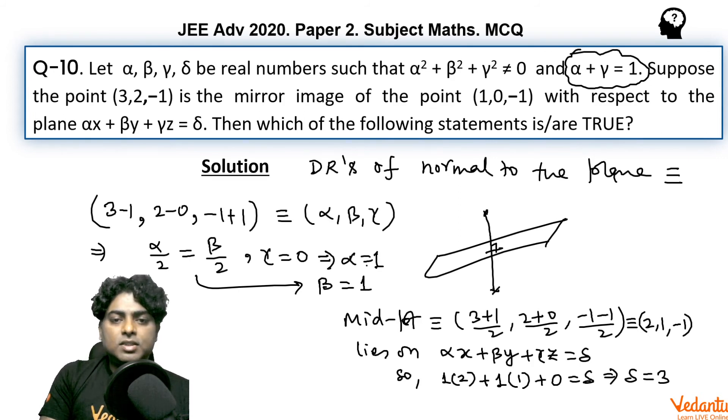So finally, α is 1, β is 1, γ is 0, and δ is 3.